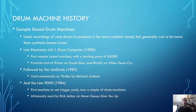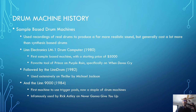Linn followed this up in 1984 with the Linn 9000 — the first machine to use trigger pads, so you could manually hit a pad and get a sound, or program by hitting the pads. This is now a staple of drum machines everywhere. It is probably best known as the drum machine used by Rick Astley on Never Gonna Give You Up — and yes, I'm pretty sure you already know that song. Everyone has been Rickrolled at least once.